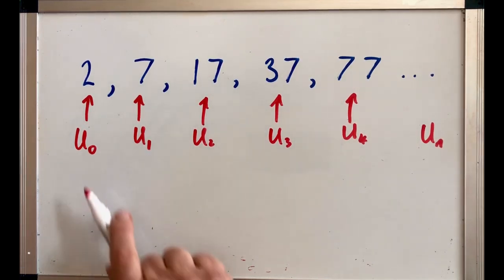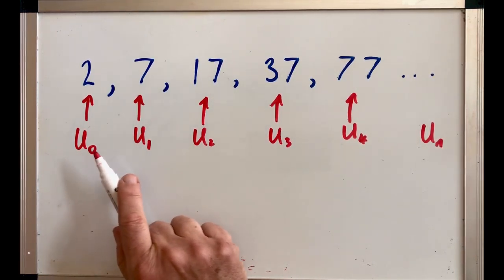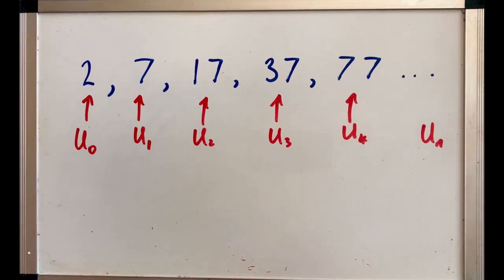Now, sometimes we don't use the letter U. We might use another letter. For example, you could have called it T. So, T₀, T₁, T₂, and so on. Generally, if there's more than one sequence involved, they will use a different capital letter for it.